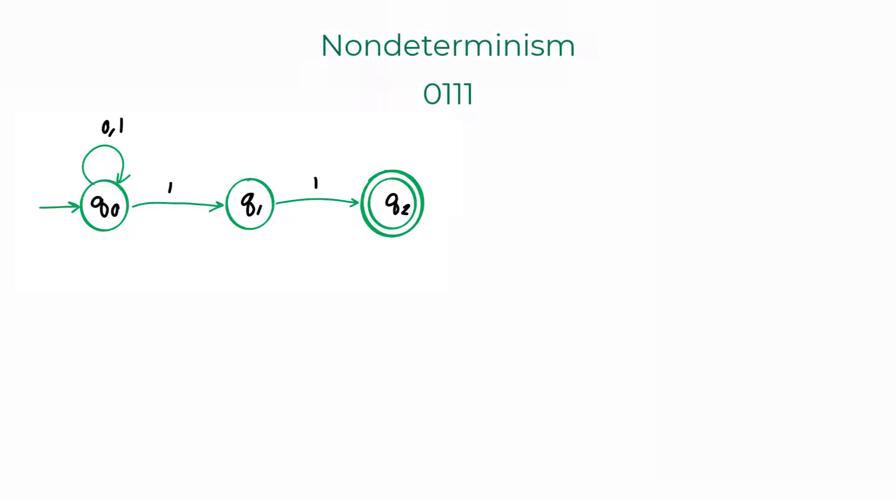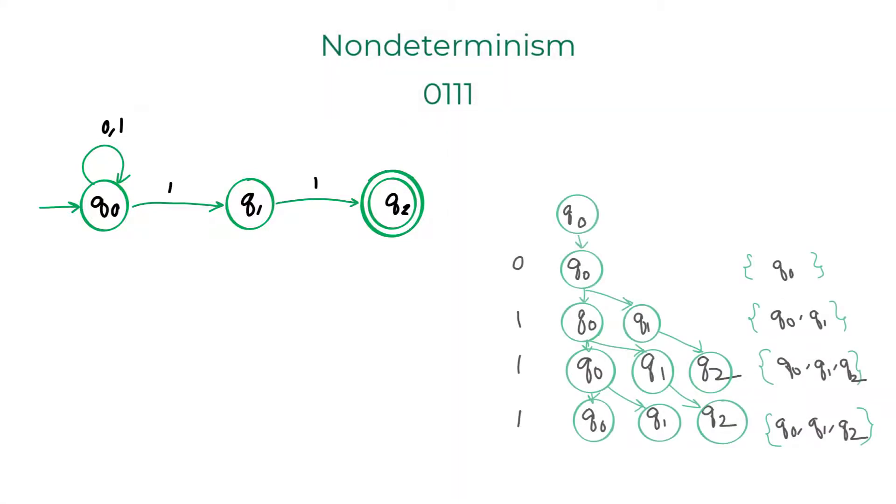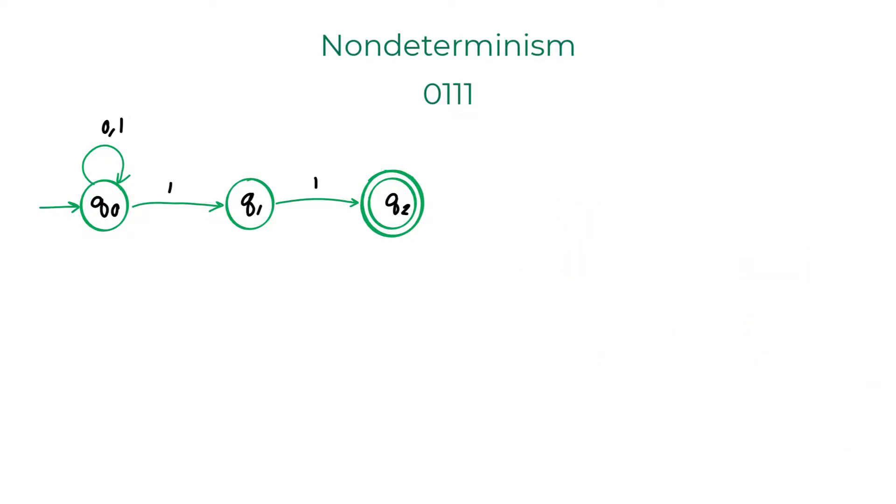I will show you a better way of visualizing the states of NFA when run on an input string. Instead of creating multiple copies, I would highlight the states in the main machine itself. I will also draw this tree graph which shows the states in which the NFA will be after reading each character.